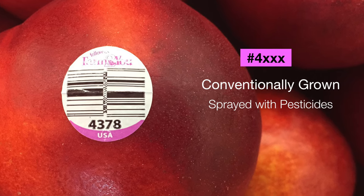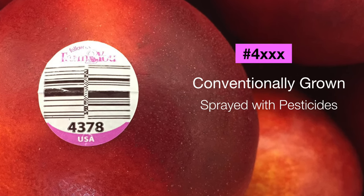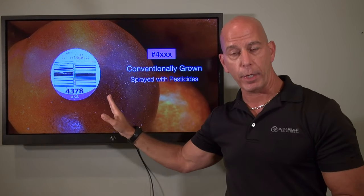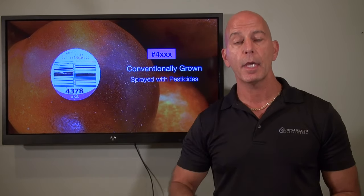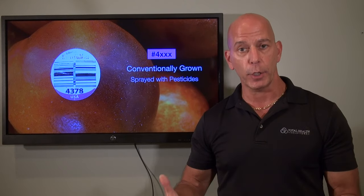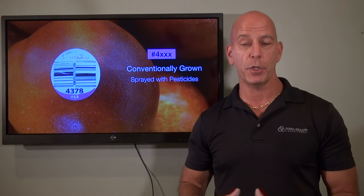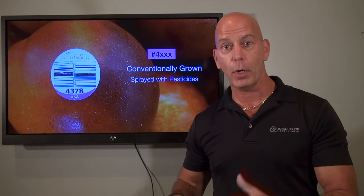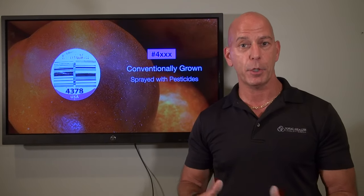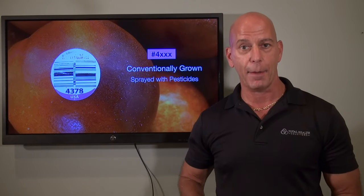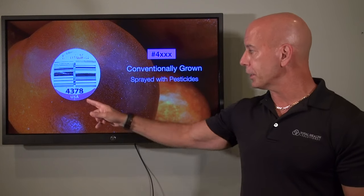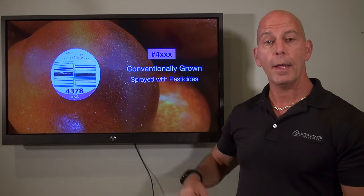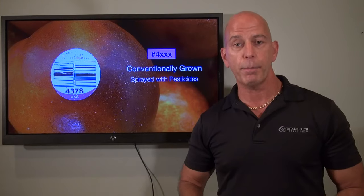If you pick up a piece of produce and the PLU code has a number four followed by three other numbers, for a total of four numbers, that means it's conventionally grown — using pesticides. So instead of worrying about GMO, at least your body will recognize it, but you may get the toxic chemicals from it. A four with three other numbers means conventionally grown and sprayed with pesticides.